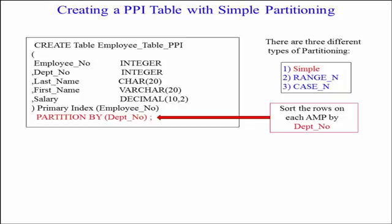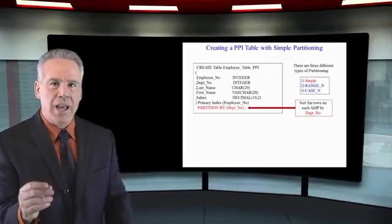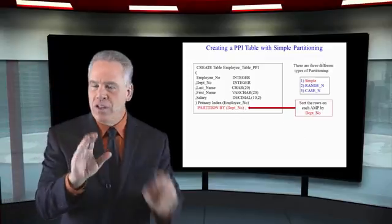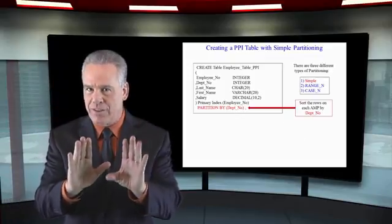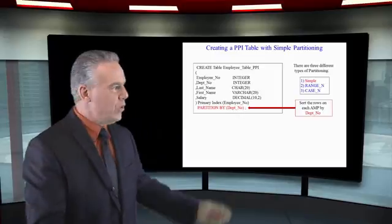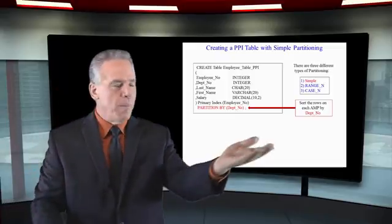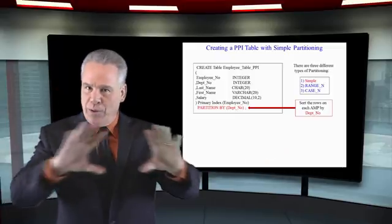But at the end we say PARTITION BY, open paren, Dept_No, close paren. And what we're really saying is, and this is not that complex, I don't want to make more of this than there is. All we're saying when we do PARTITION BY Dept_No is lay the rows out by the primary index of employee number.